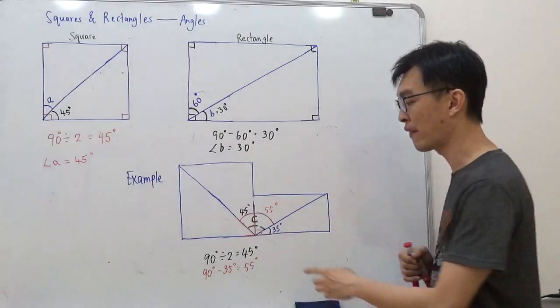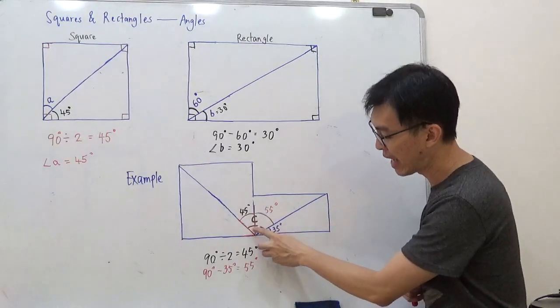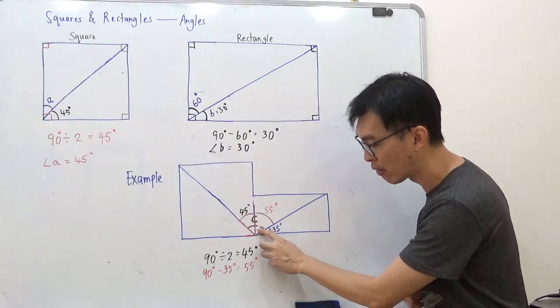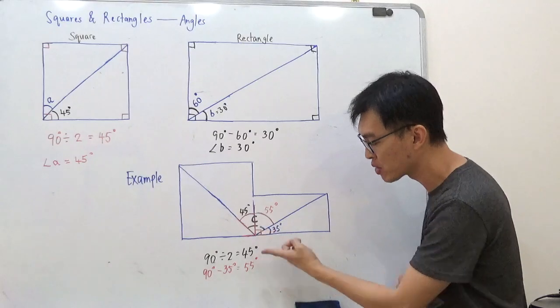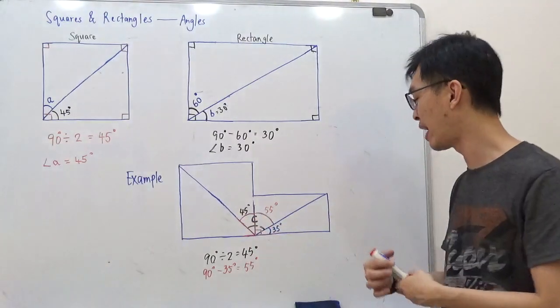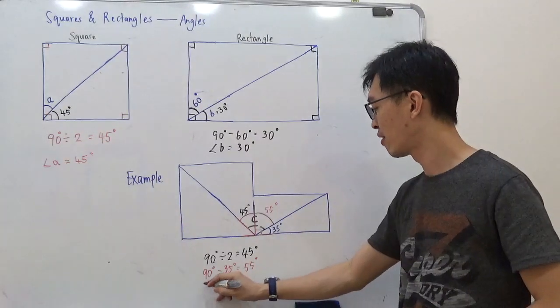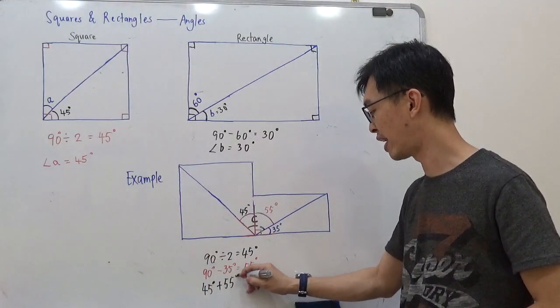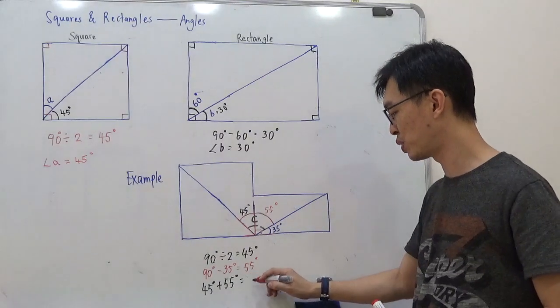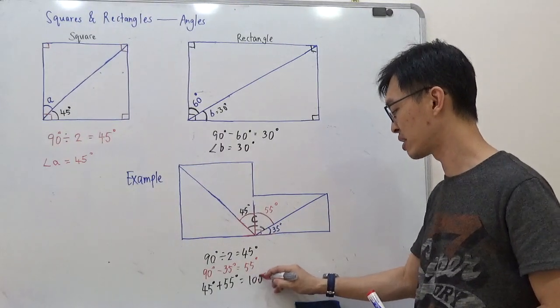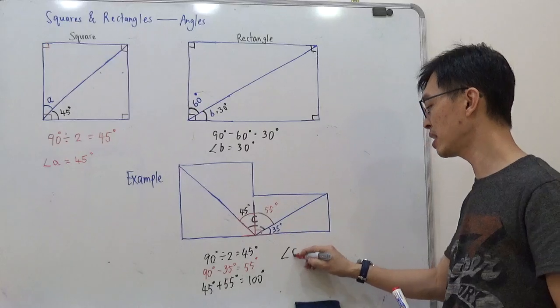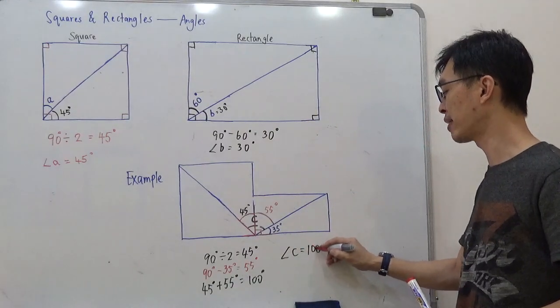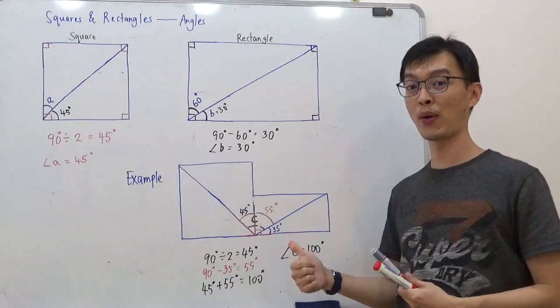Now to find angle C, it's very easy already. Angle C is this black part down here, black angle down here. So it is 45 plus 55. So let's add them up. 45 plus 55 equals to 100 degrees. So angle C equals to 100 degrees. Have you got it right?